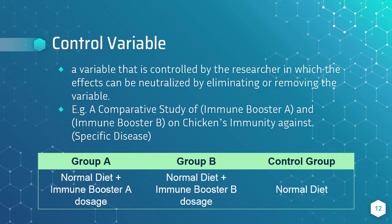For instance, a researcher wants to observe whether immune booster A or immune booster B decreases chances of a specific disease among hens. The study could have three setups: the first group of hens will be fed their normal diet plus a dosage of immune booster A; the second set will be fed their normal diet plus immune booster B; and the third group will just have their normal diet. By doing this in a controlled setup, the effect of the immune boosters — which act as the independent variables — on the hens' health, the dependent variable, will be seen clearly.